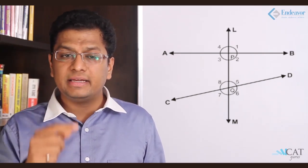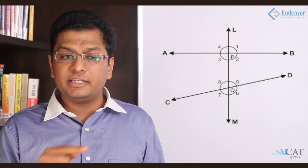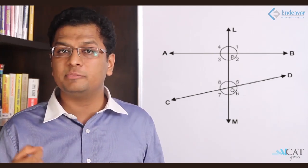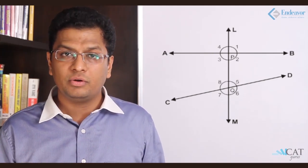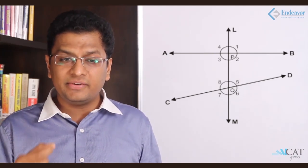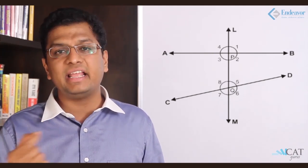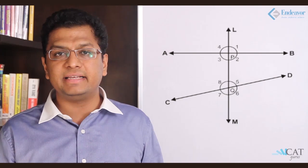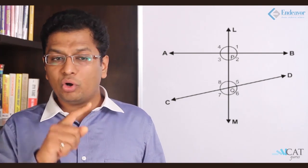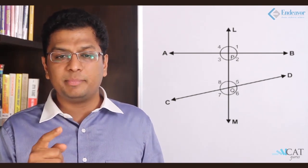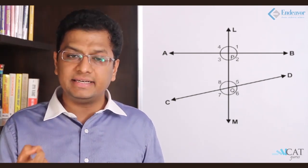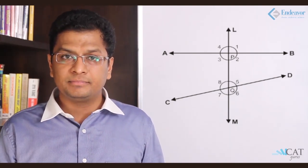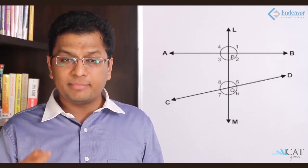It looks like LM is perpendicular to AB. Perpendicular means the angle between LM and AB is 90 degrees, so all four angles would typically be 90 degrees.